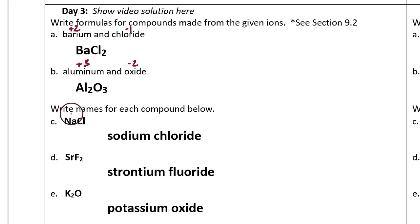Question C, the reverse process. Write the names. Na is the symbol for sodium, so you write the word sodium. Cl is the symbol for the word chlorine, but when it's in an ionic compound, the ending of chlorine changes to an 'ide' ending, and that's chloride. So to write the name, you write the name of each symbol: sodium chloride.